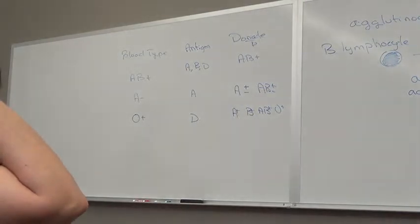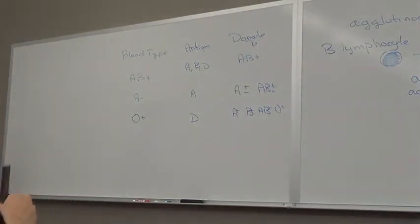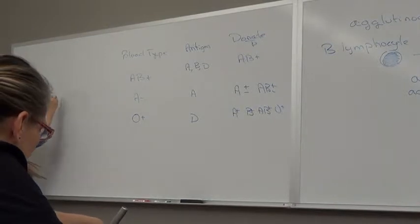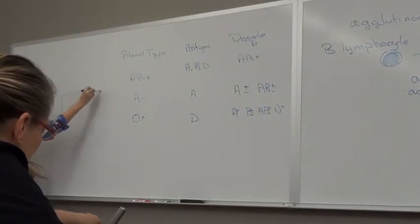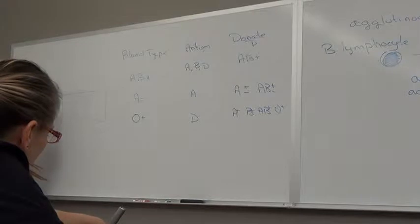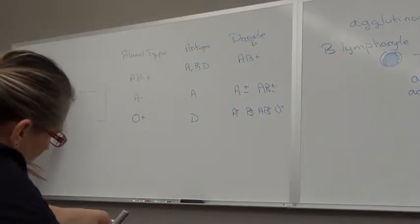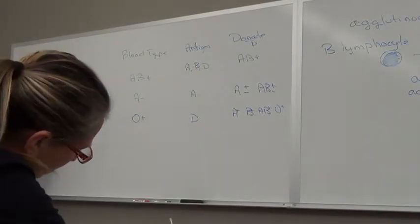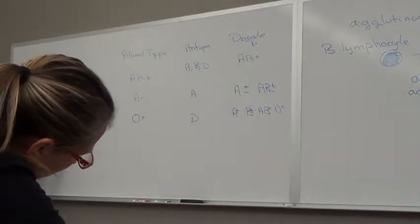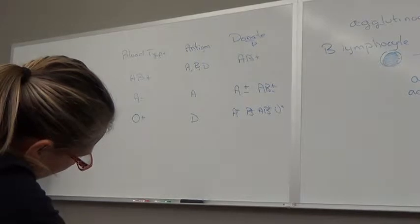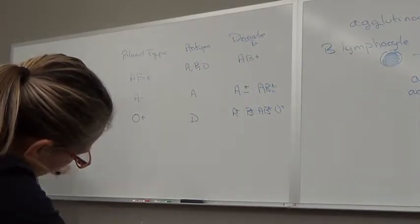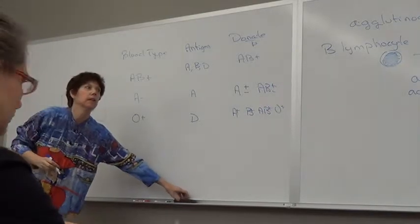So on your exam for the blood typing, for the lecture exam, what I will do is give you a table with a couple of blood types and ask you to tell me who they can donate to or receive from. And I have them already written out and then you just circle or cross out whichever ones they can use.